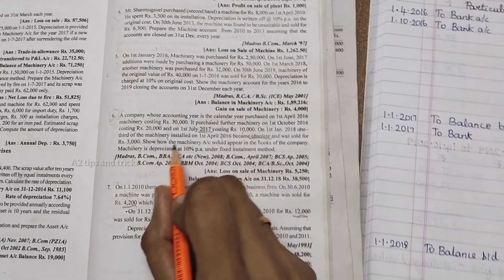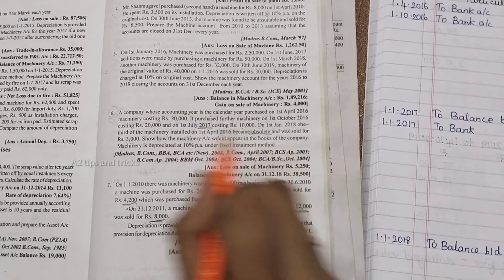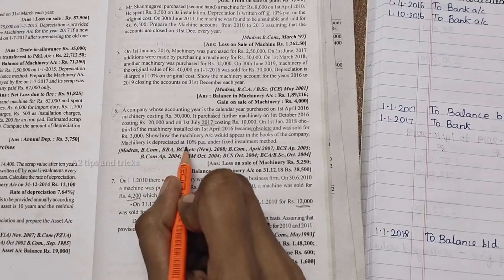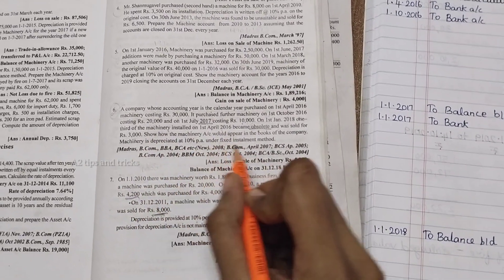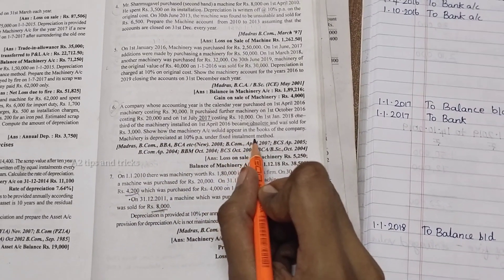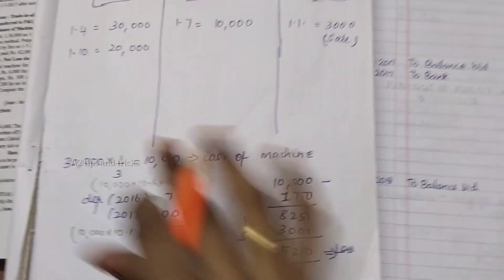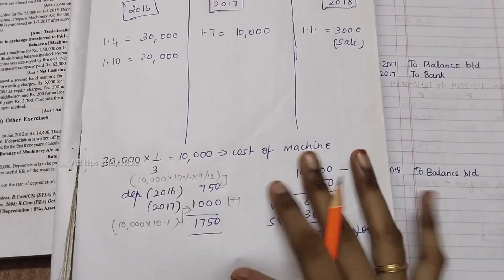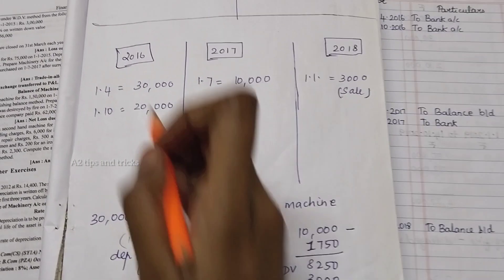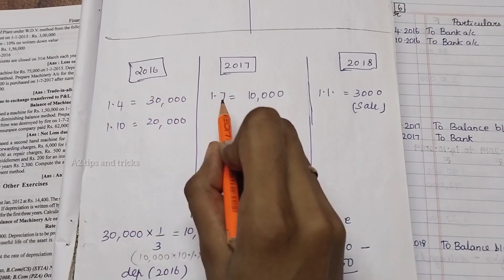So how the machinery account will appear in the books of the company. Machinery account is depreciated at 10% under the Fixed Installment method. We have 3 years: 2016, 2017, and 2018.